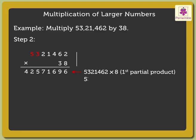Step 2: Multiply 53,21,462 by the digit in the tens place of the multiplier. As the digit 3 is in the tens place, we are actually multiplying by 30. So, we write a 0 below the digit 6 of the first partial product.